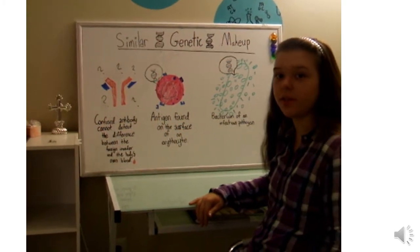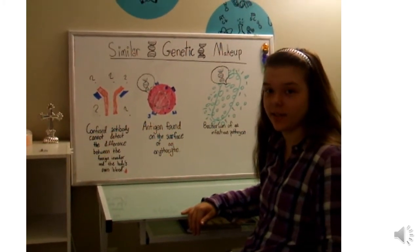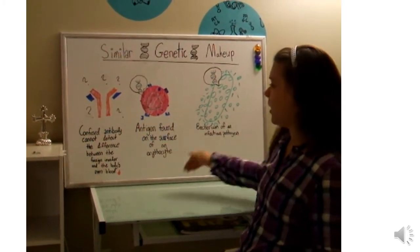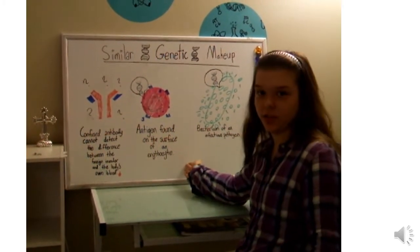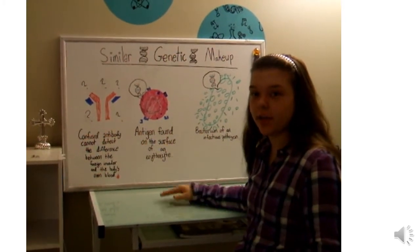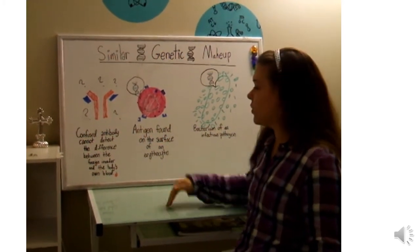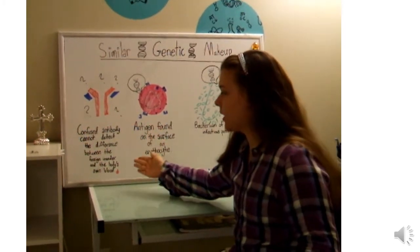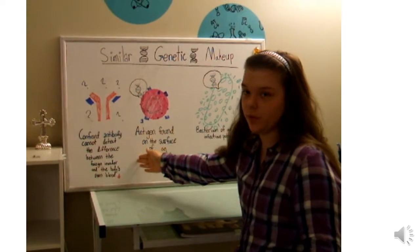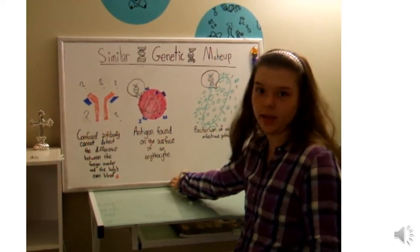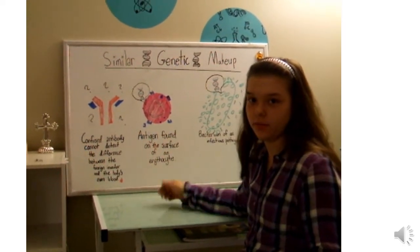In certain infectious diseases, bacteria and antigens have a genetic makeup that looks very similar, so the confused antibody cannot detect the difference between the foreign invader and the antigen — the body's own blood.